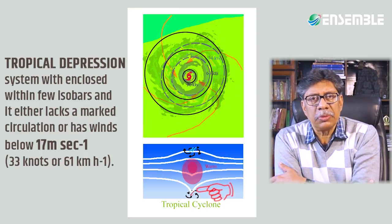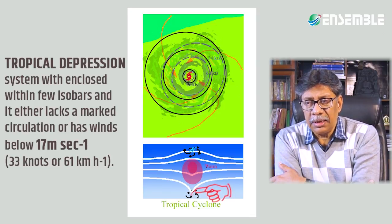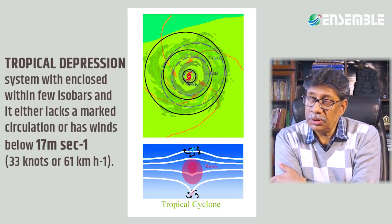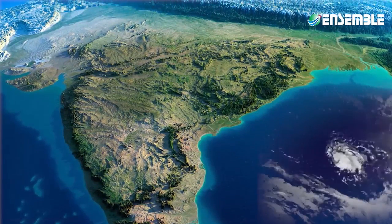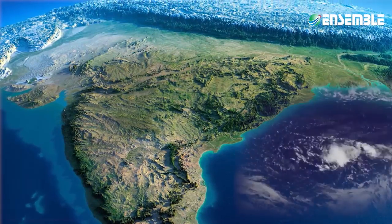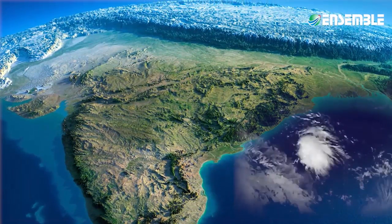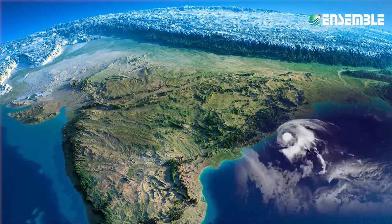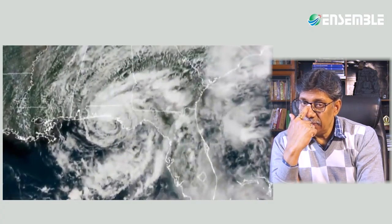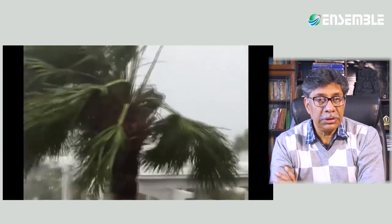Numerous tropical depressions originate in the oceans. Many originate over the Bay of Bengal region, and they sometimes cross India or graduate from a tropical depression into a tropical storm and then into a tropical cyclone. The second type is a tropical storm — a system with several closed isobars and a wind circulation of 17 to 32 meters per second.